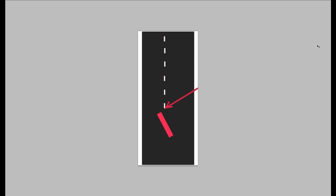We're going to get in the airplane and I'm going to give you some examples of how to use the rudder. We'll do that in landing and also in a coordinated and uncoordinated turn. So let's get up in the airplane.